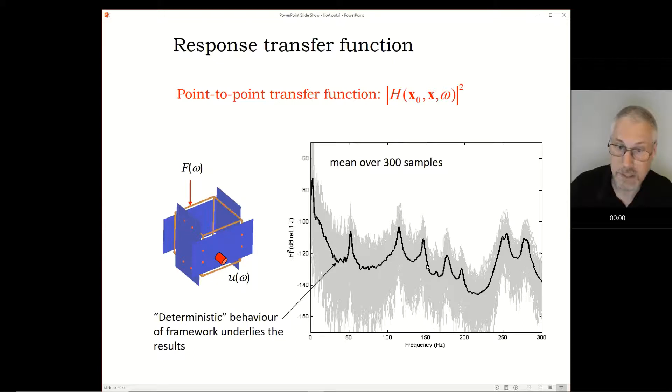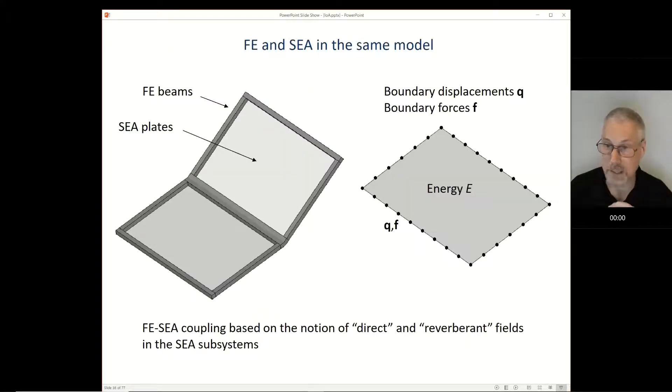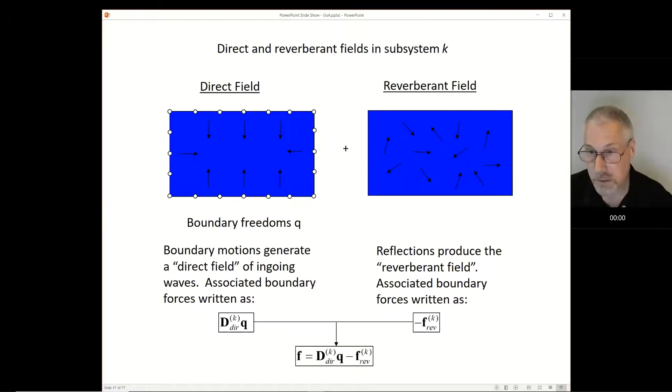To try and model that kind of thing, ideally what we'd like to do is have FE and SEA in the same model. To do that, we'd have to have subsystems with energy variables coupled to FE systems with discrete degrees of freedom. So how can we couple SEA to FE? I don't have time to go through this in detail today, but just to say that it can be done. The basic idea behind it is that if we think of one of our SEA subsystems and we shake the boundary, that creates waves that go into the system. If we only have those waves, which we call the direct field, then life would be simple. We could get a stiffness matrix for shaking the boundary, which we would call the direct field dynamic stiffness matrix, and we can just use that.